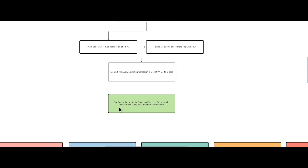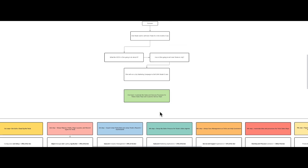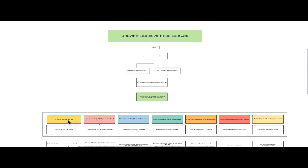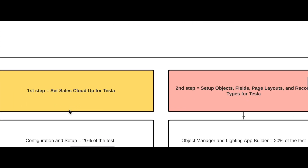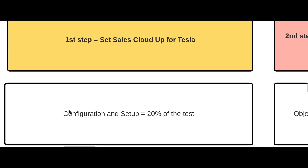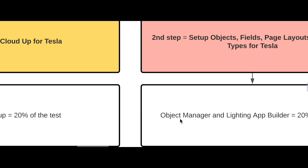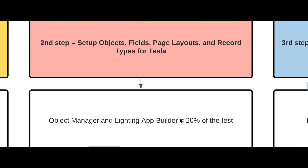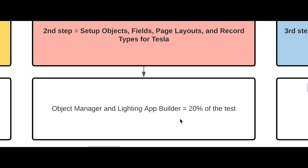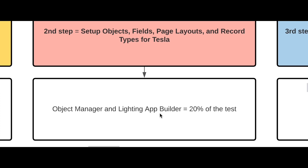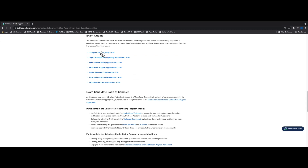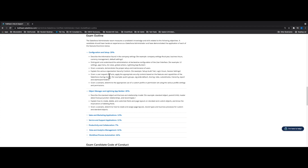I got to that end goal by breaking the exam guide up into seven different sections. The first section that makes the most sense is to set up Sales Cloud for Tesla — that's Configuration and Setup, which is 20% of the test. The second step in the exam guide is to set up objects, fields, page layouts, and record types for Tesla — that's Object Manager and Lightning App Builder. These are the first two sections on the exam outline, and they're the first two things you'd do in a real-world implementation.